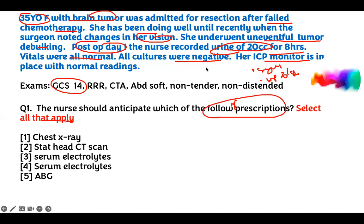All this extra information they've given you is largely irrelevant. Everything is normal — ICP monitor is normal, GCS is expected post-surgery. Break it down to simple form: she has a brain tumor, was getting chemotherapy, just had surgery. After surgery, 20cc urine output over eight hours — that's what you care about. When you look at everything else, everything is normal. So what do you want to do? Bring your content. Anyone who has brain surgery — there are two things to worry about.